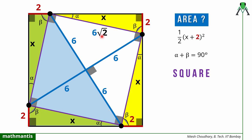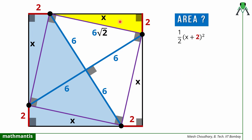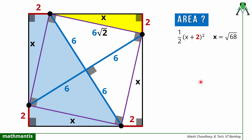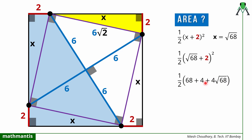Now we find x. Focusing on the corner triangle and applying Pythagoras theorem: x² + 2² = (6√2)², which gives x² + 4 = 72, so x² = 68 and x = √68. The area is half times (√68 + 2)², which expands as half times (68 + 4 + 2·√68·2) = half times (72 + 4√68). This simplifies to 36 + 2√68. Since √68 = 2√17, the area becomes 36 + 4√17. This is the area of the blue shaded region.